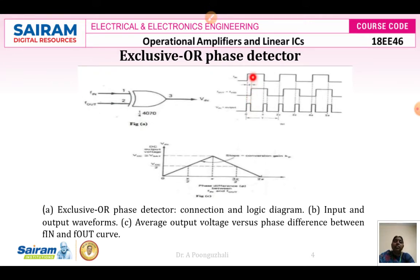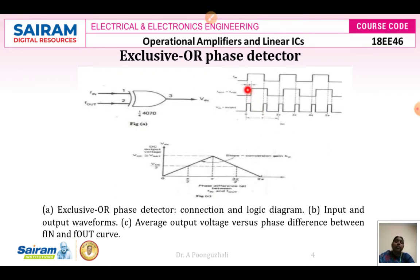At time T2, F-in is also high and F-out is also high. When both inputs are the same, the output of the exclusive-OR gate is zero. At time T3, F-in is zero but F-out is high. When both inputs are different, the output is high. In this time period, the DC pulse output is generated for every pi duration. The phase shift between these two signals is phi.